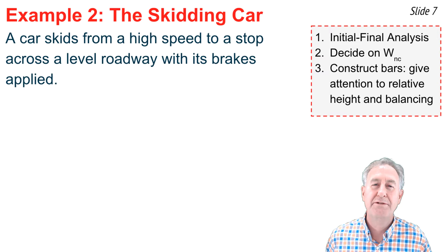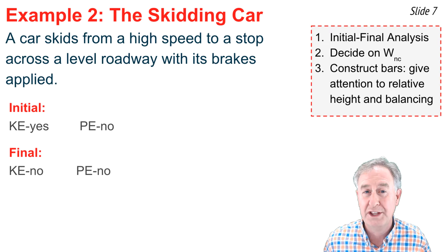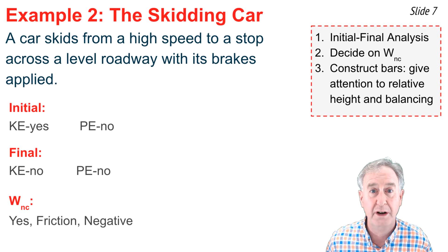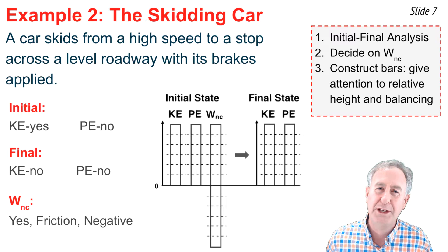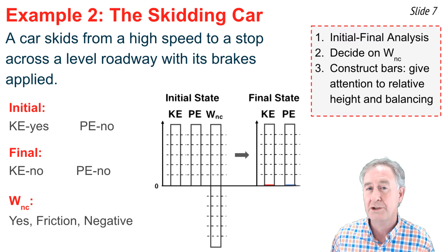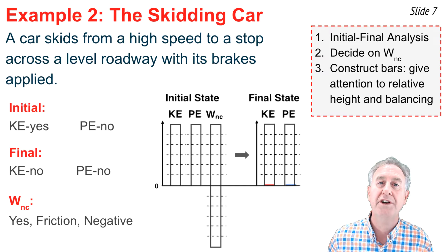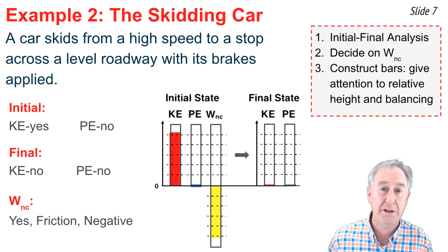In example two, a car skids from high speed to a stop across a level highway with its brakes applied. Initially the car is moving, so it has kinetic energy, but it's on level ground so no potential energy. In the final state, there's still no potential energy and no kinetic energy — the car has stopped. Friction does work; it acts opposite the direction of motion and does negative work, removing mechanical energy from the car. I show five units of kinetic and negative five units of work on the left, and zero on the right — balanced.